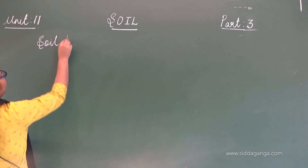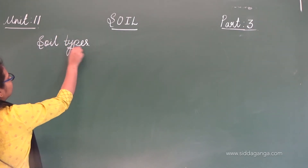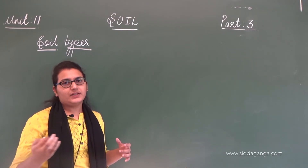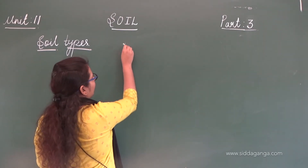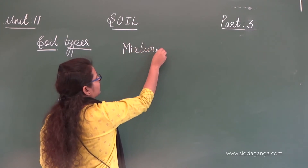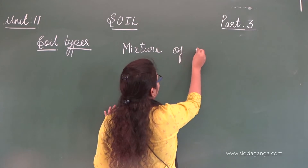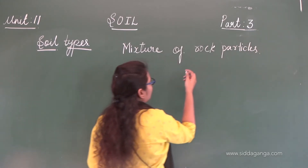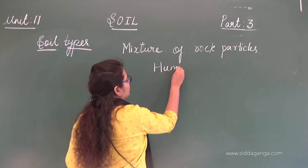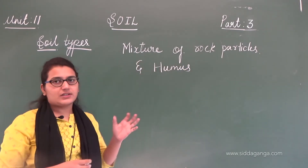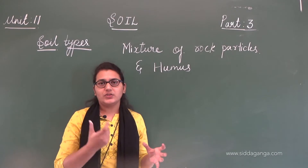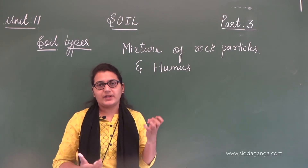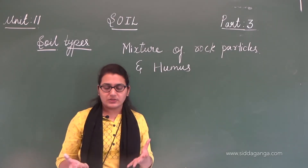We have different types of soil. What is soil basically? Soil is the mixture of rock particles and humus. Soil is made up by the weathering of rocks — that is, rocks break down to form soil. Soil contains rock particles and also humus. What does soil contain? Humus is nothing but the remains of dead and decaying plant and animal waste.